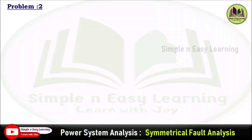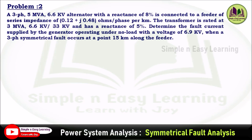Symmetrical fault analysis problem number 2. A 3-phase 5 MVA 6.6 kV alternator with a reactance of 8% is connected to a feeder of series impedance 0.12 + j0.48 ohms per phase per kilometer. The transformer is rated at 3 MVA, 6.6 kV / 33 kV and has a reactance of 5%. Determine the fault current supplied by the generator operating under no load with a voltage of 6.9 kV, when a 3-phase symmetrical fault occurs at a point 15 km along the feeder.